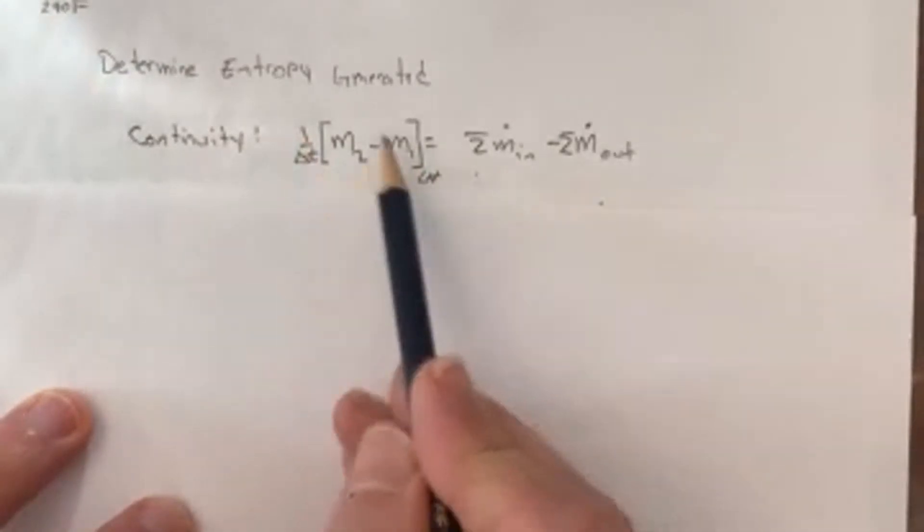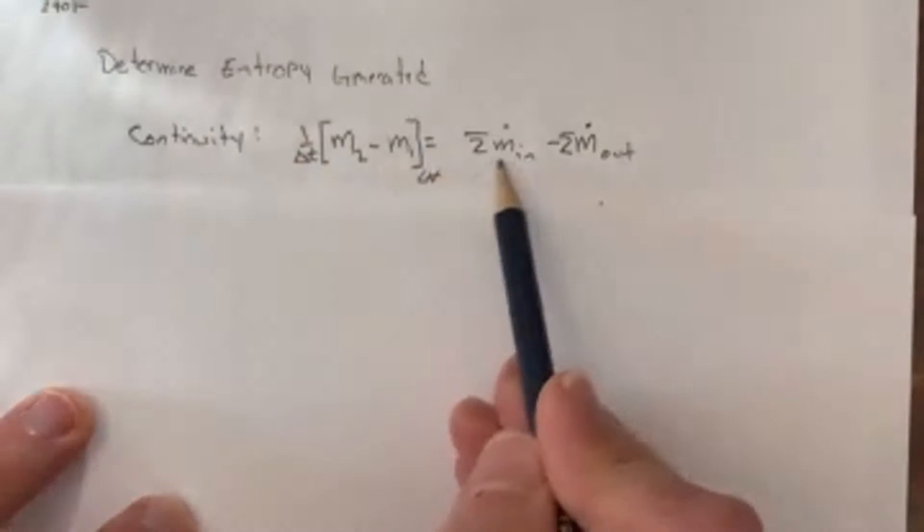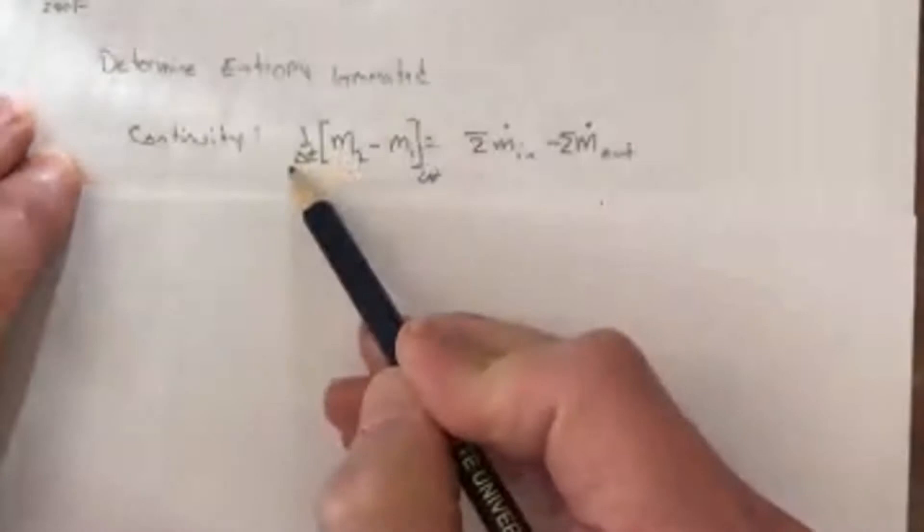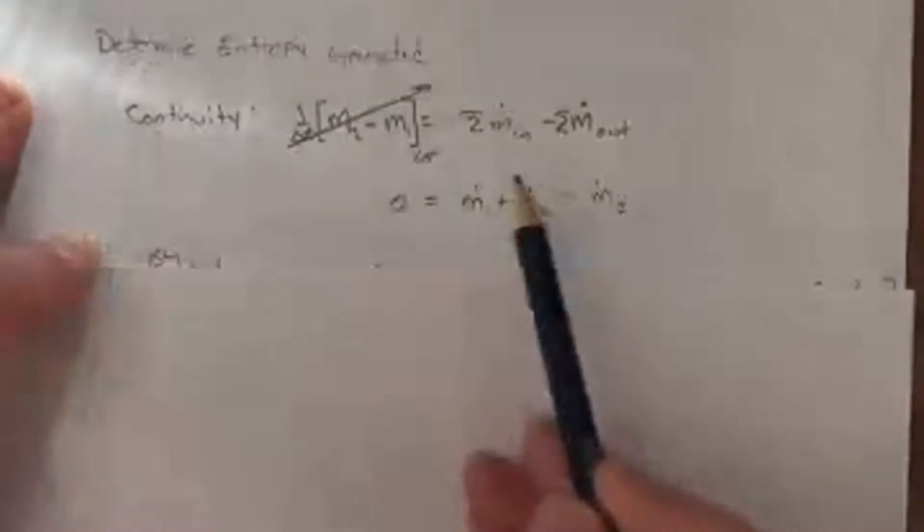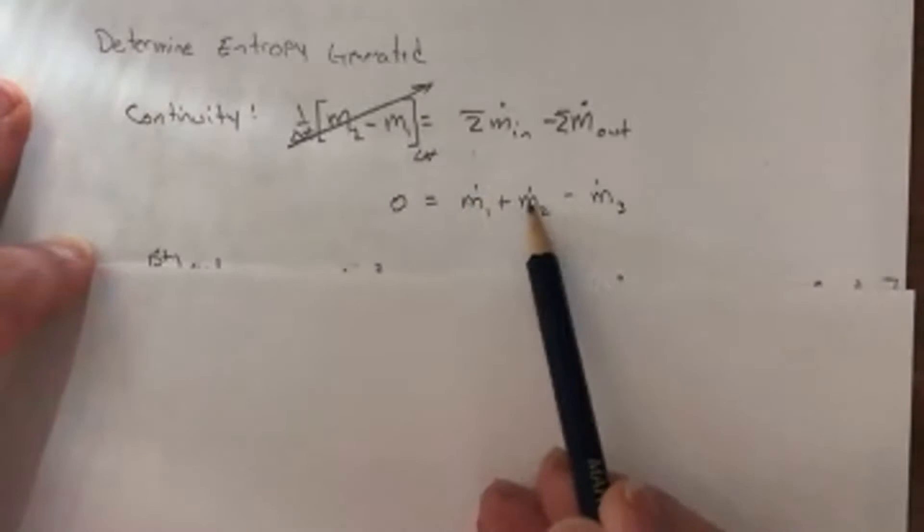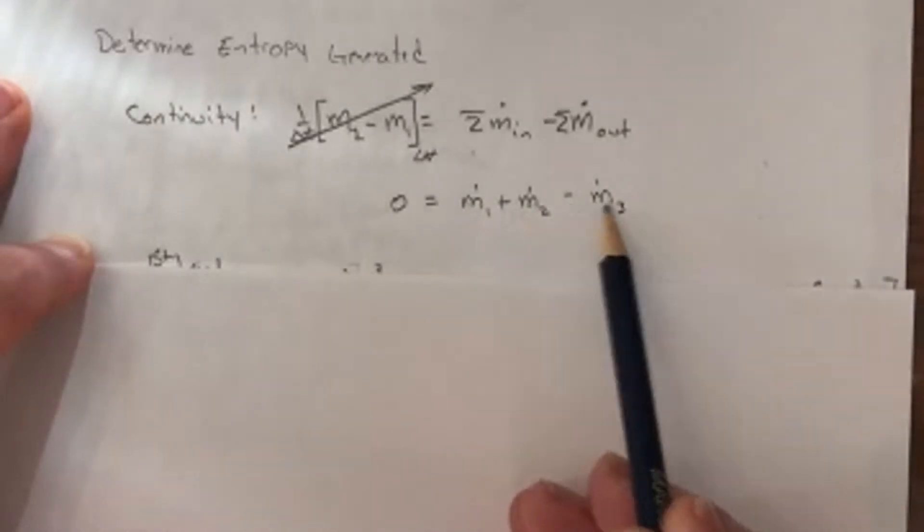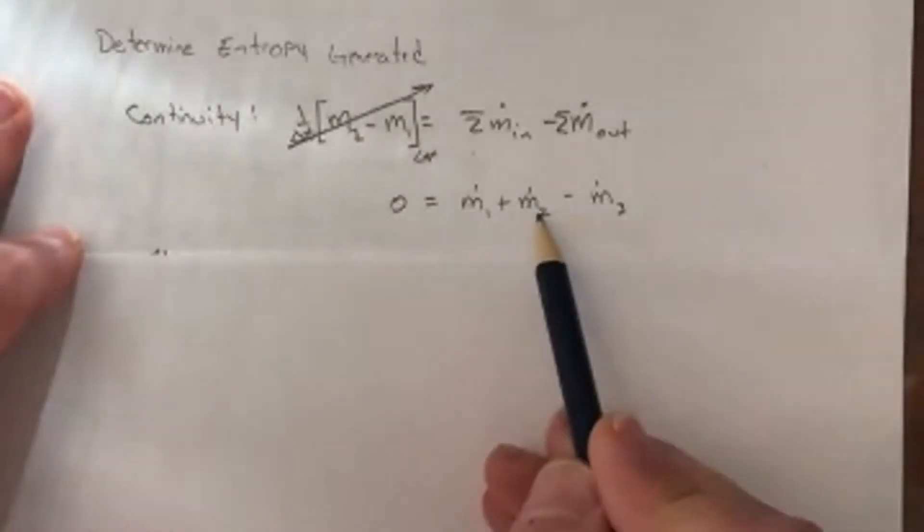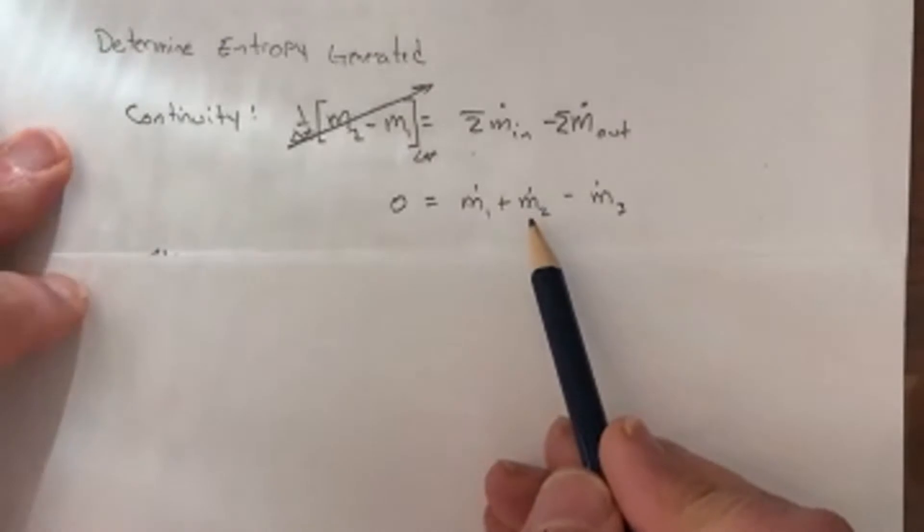So initially the continuity equation for all systems, and I'm going to work in rate form here, would be the change of mass in the system M2 minus M1 equals the rate of mass entering the system minus the rate of mass exiting the system. So again, this is steady, so that term is going to be zero. And I have two inlets and one exit. So M dot one plus M dot two minus M dot three. So I can arrange and solve for one of my M dots and get rid of one of my unknowns. I still have one more.